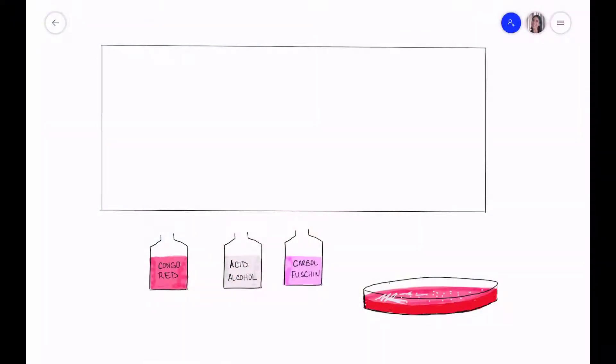The capsule stain requires two different dyes, Congo Red and Carbofusion. In addition we need a fixing agent which is acid alcohol. So it turns out that the capsules on the bacteria don't absorb stains at all. So how can we view them using a stain? Well the way that we're going to view the capsules is by staining everything else including the background.